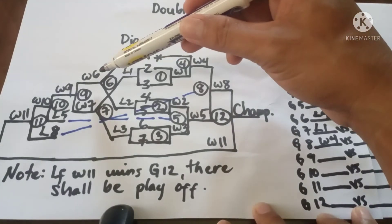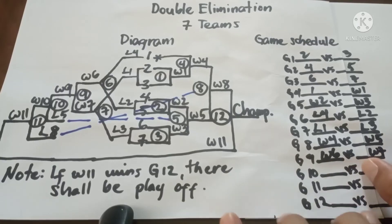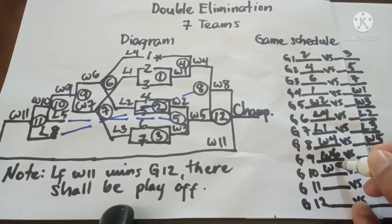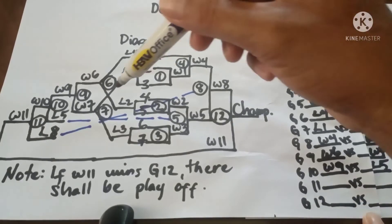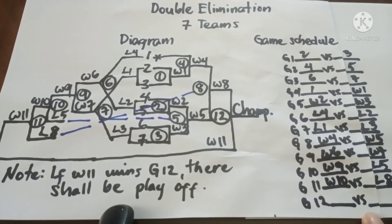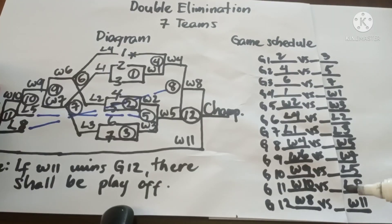Game 9 is Winner 6 vs Winner 7. Game 10 is Winner 9 vs Loser 5. Game 11 is Winner 10 vs Loser 8. Game 12 is Winner 8 vs Winner 11. This is the diagram and game schedule for seven teams in double elimination.